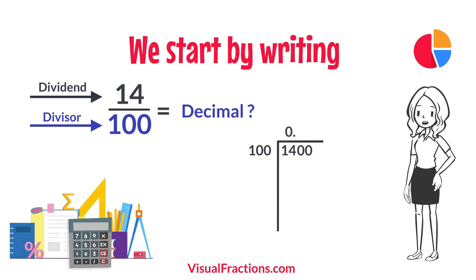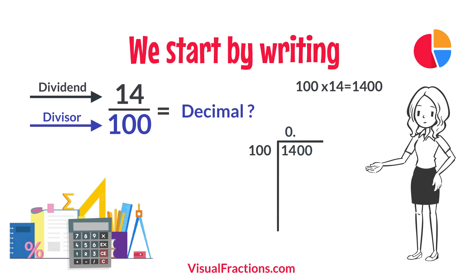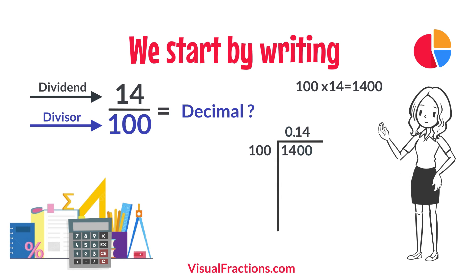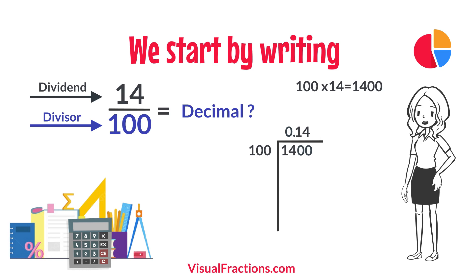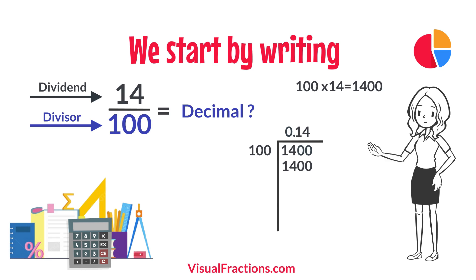How many times does 100 go into 1400? Exactly 14 times. We write 14 after the decimal point in the quotient, making it 0.14. Multiplying 14 by 100 gives us 1400. When we subtract 1400 from 1400, we get a remainder of 0.